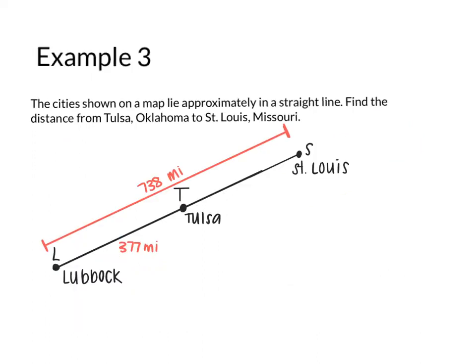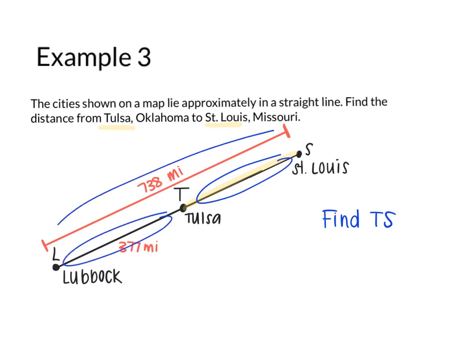In the last example, we're actually going to do the same thing. It's a little bit of a word problem here. So imagine this being on a map. It says the cities shown on a map lie approximately in a straight line. Find the distance from Tulsa, Oklahoma to St. Louis, Missouri. So we're given some cities here that are in the line and some distances between these cities. The distance I'm trying to find is from Tulsa to St. Louis. That would be TS. So my goal here is to basically find the length of TS. Well, TS is a part of the whole segment. So again, I can do part plus part equals whole. So I'll write myself a little equation. This is the part I don't know. I'll call it X. So X plus 377 should equal the whole distance, which is 738.